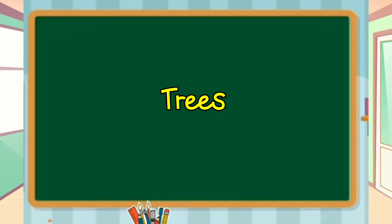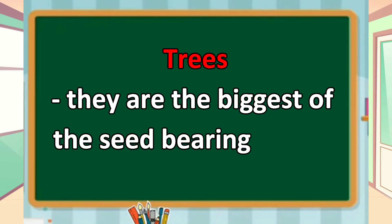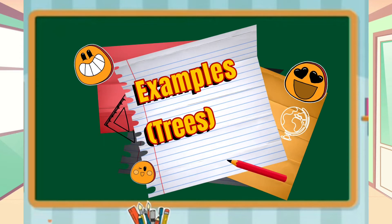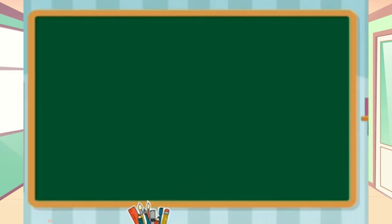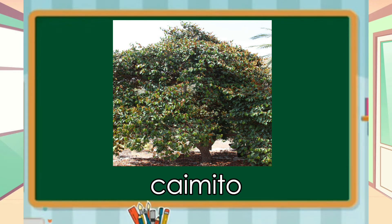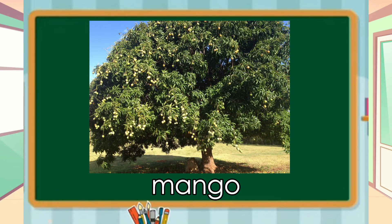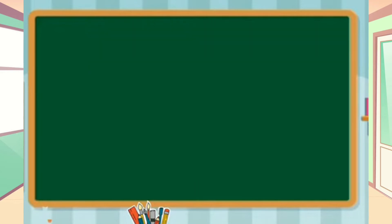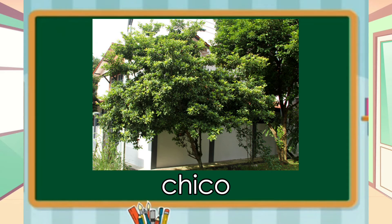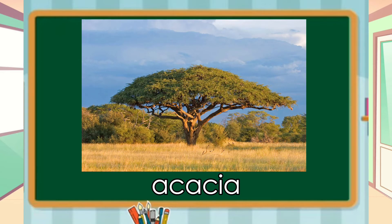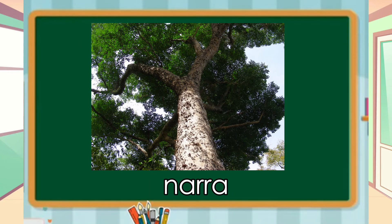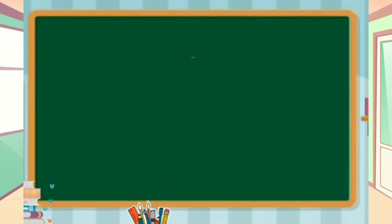The fourth classification are the trees. They are the biggest of the seed-bearing plants. Samples of trees: mulave, caimito, mango, chico, avocado, acacia, and nara.